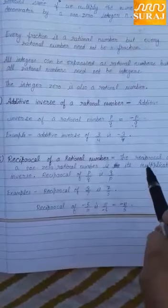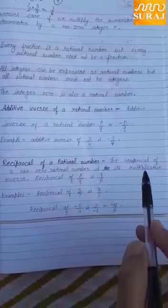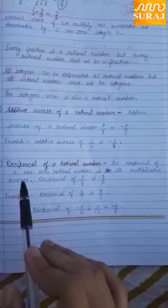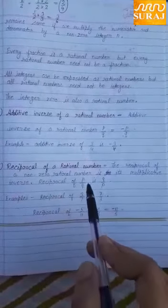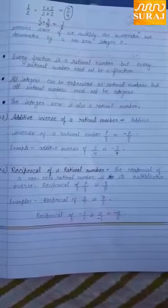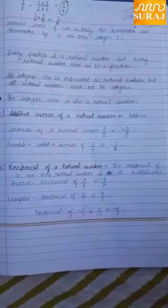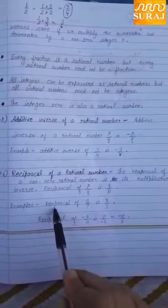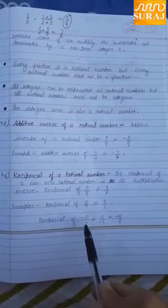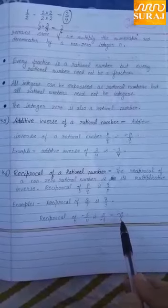Reciprocal of a rational number: The reciprocal of a non-zero rational number is its multiplicative inverse. Reciprocal of P upon Q is Q upon P — numerator ko denominator banate hain aur denominator ko numerator, aapas mein interchange karte hain. For example, reciprocal of 3 upon 7 is 7 upon 3. The reciprocal of minus 5 upon 11 is 11 upon minus 5, which equals minus 11 upon 5.